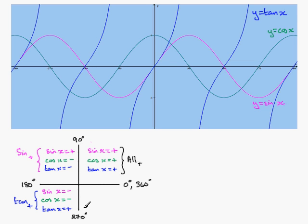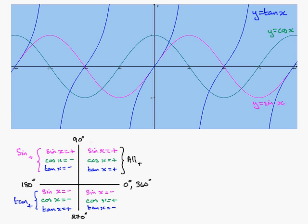In the fourth quadrant, between 270 degrees and 360 degrees: looking at the sine graph, it's below the x-axis, so sine x is negative. Looking at the cosine graph, it's positive — above the x-axis. And finally the tan graph is below the x-axis, so it's negative. So in the fourth quadrant, the only positive one is cosine.